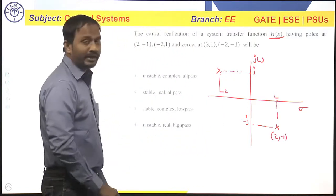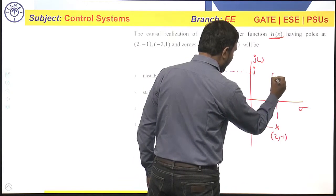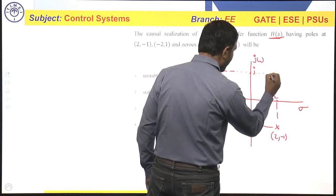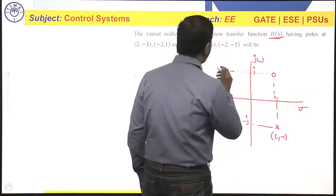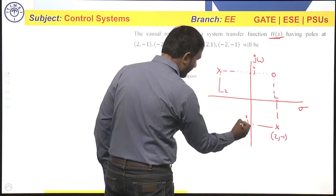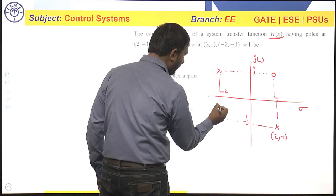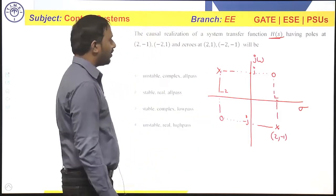And zeros at 2 comma 1, 2 comma 1, 2 plus j, locate the zero here, this is the first zero. And the second zero is located at minus 2 comma minus 1, this is minus 2 minus j, so this will be your second zero. Now, this is the pole zero plot.